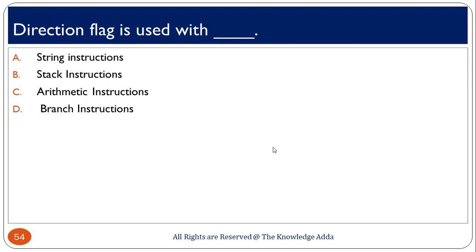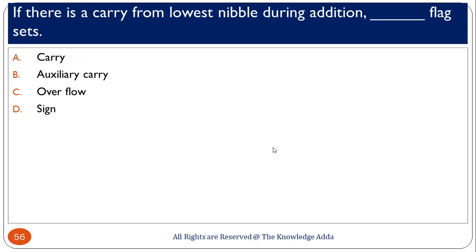The direction flag is mostly used with string instructions — whenever string instructions are used in the 8086 microprocessor, the direction flag is set or reset accordingly. If there is a carry from the lowest nibble during an operation, which flag is set? A nibble is 4 bits. If carry is generated from the lowest nibble and transferred to the next, the auxiliary carry flag is set.